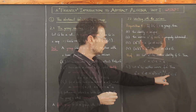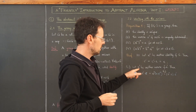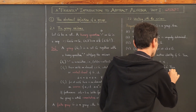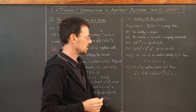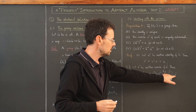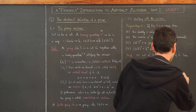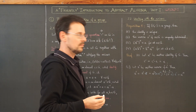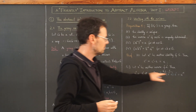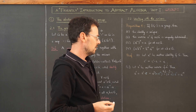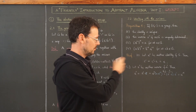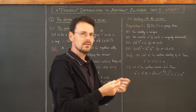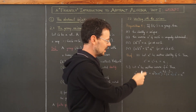Since a' is assumed to be an inverse of a, a'·a gives the identity, and we're left with e·a⁻¹, which is of course a⁻¹ since e is the identity. So we've proven that a' = a⁻¹. Only after proving this is the notation a⁻¹ well-defined as the inverse of an element — without it, it would be a bit ambiguous.